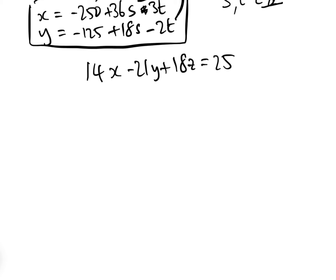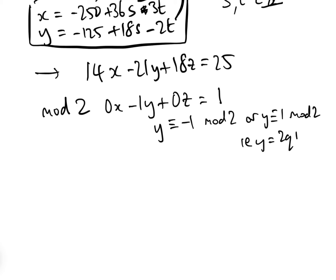Let's take mod 2 of this whole thing. 14 mod 2 is 0, so that's 0x. Minus 21 is minus 1y. 18 mod 2 is 0z, and 25 mod 2 is 1. So we basically have that minus y equals 1, or y equals minus 1 mod 2, or y equals 1 mod 2, i.e. y equals 2Q plus 1 for some Q.